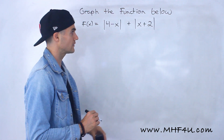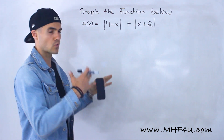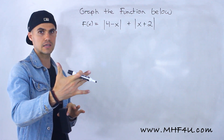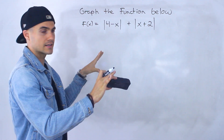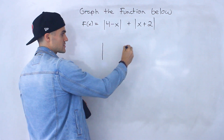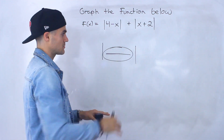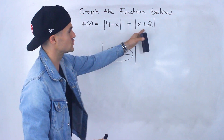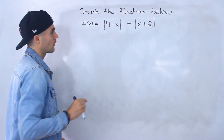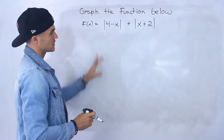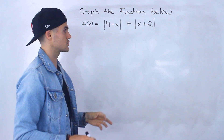Notice we're adding two absolute value expressions. With this function in particular, we can't graph something first and then reflect the negative y values to positive ones, because these absolute value expressions are sort of isolated. We don't have a single absolute value of some function. We have two separated absolute values, so that method is tougher here. What we're going to have to do is convert this to a piecewise function and then graph it.